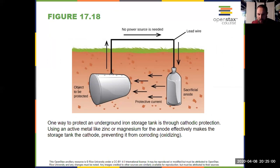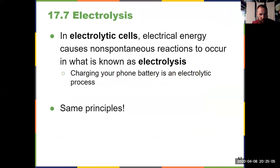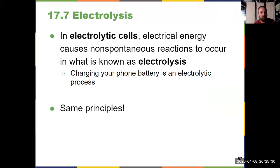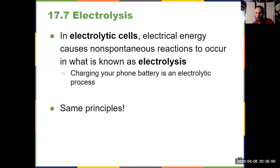Let's finish the chapter with section 17.7 — electrolysis. Electrolysis deals with electrolytic cells, which are the direct opposite of a galvanic cell. Galvanic or voltaic cells always have a spontaneous reaction and produce electricity. An electrolytic cell is where we have two things together that would be non-spontaneous, but we put electrical energy into the system to cause it to occur. Every night when you charge your phone, putting electricity back into it and reversing the reaction — that's an electrolytic process.